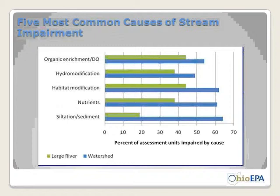The five most important causes of stream impairment in the state are: organic enrichment (i.e., sediment running into streams); hydrologic modification; habitat modification — which is the actual structure of the stream or wetland; nutrients entering the site; and siltation from sediment. Looking at the chart, the blue bar shows the watershed approach and you can compare impairment caused by watershed versus large river approaches.